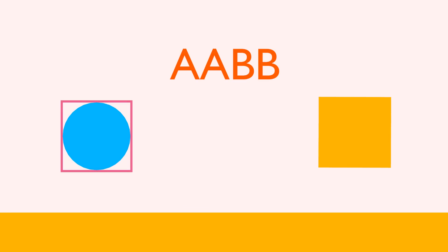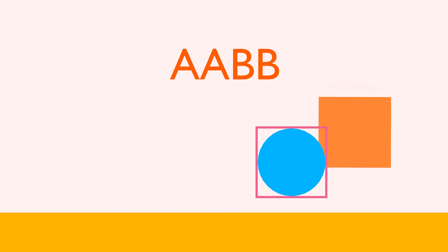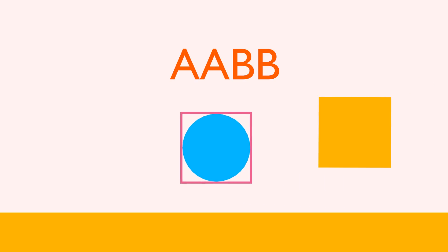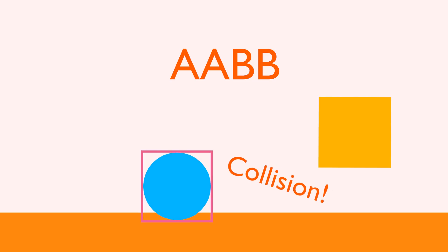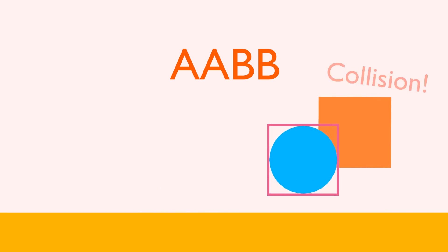First of all, there is an algorithm called AABB, for Axis Aligned Bounding Box. This simply means that we only check for the superposition of the game objects' bounding boxes. Those boxes, or rectangles, are always aligned with the X and Y world axes. AABB collisions are very simple to handle and lightweight, performance-wise.